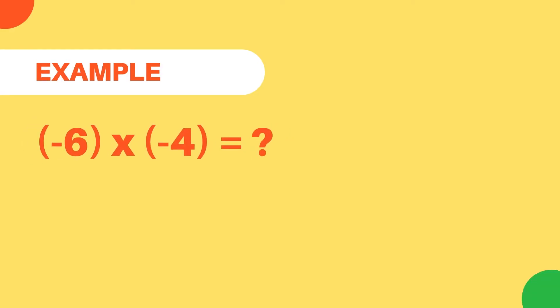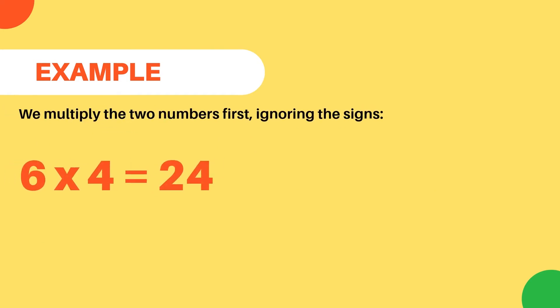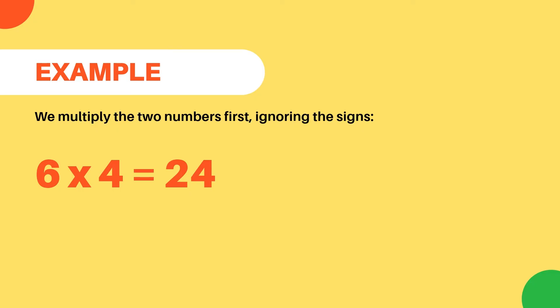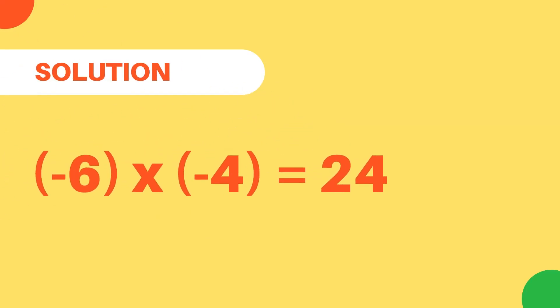Let's look at an example that helps us understand these rules. Negative 6 multiplied by negative 4 equals? To solve this problem, we apply the first rule: when multiplying or dividing two numbers with the same sign, the result is positive. We multiply the two numbers first, ignoring any signs, so we calculate 6 multiplied by 4 equals 24. Then, since both numbers are negative, our answer stays positive. So the final solution is negative 6 multiplied by negative 4 equals 24.